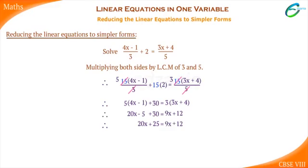Now, let us combine the like terms. That is, transforming 25 to RHS and 9x to LHS, which gives 11x equals to minus 13. Transform 11 to RHS, we get x is equal to minus 13 by 11.